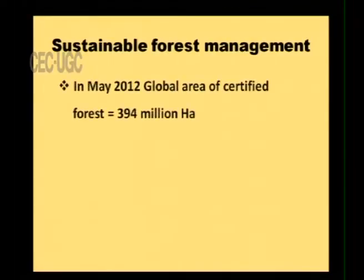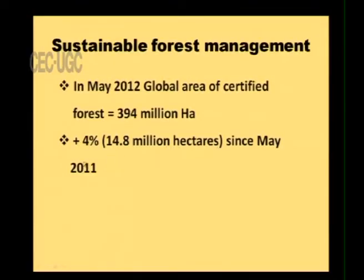Some measures have already been taken for forest conservation, one of which is global forest area certification. As of May 2012, the global area of certified forest was 394 million hectares. Various governments and private agencies have started certifying forests according to their nature and health. This represents a 4 percent increase — 14.8 million hectares — since May 2011, which is a good sign.